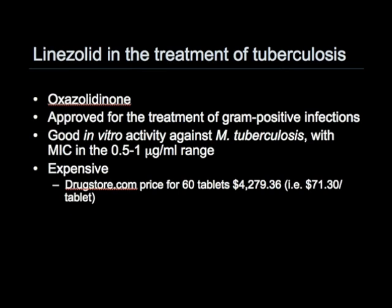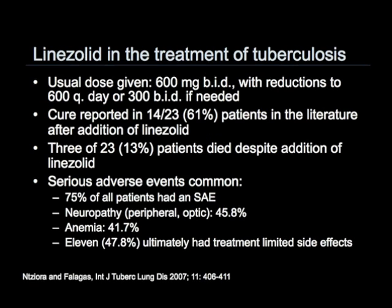I would like to comment specifically on a few newer drugs used in the treatment of MDR-TB, including linezolid. Linezolid belongs to the oxazolidinone class of antibiotics. It's generally used for the treatment of gram-positive infections, although it has good in vitro activity against Mycobacterium tuberculosis with fairly low MICs. On the other hand, linezolid is extremely expensive and will generally be beyond the ability of many TB programs in terms of cost. Because of its activity, it has been used in cases of extensively drug resistant TB, and I would like to review that experience.